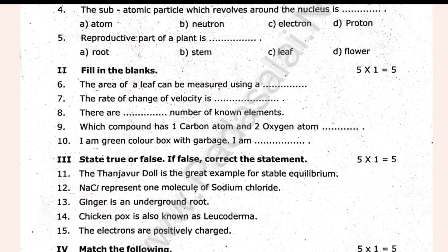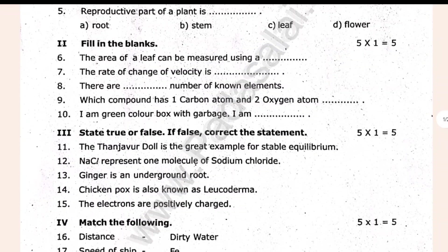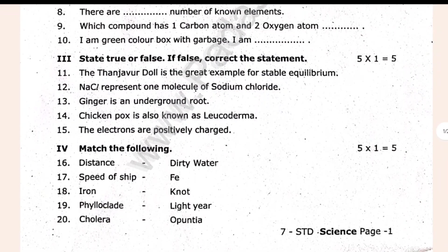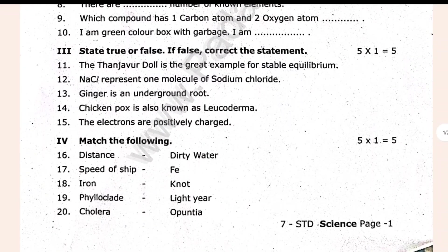4 Marks. Which compound has 1 carbon atom and 2 oxygen atoms? I am in a green color box. This is about plants. You can see true or false and match it. This is the third — the grid. Example for stable equilibrium — that's true or false.